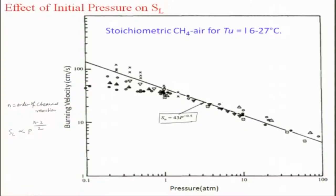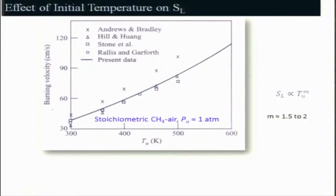People have also looked at various data and couched it in some other form which we will be discussing. Before that, we will look at the effect of initial temperature on the burning velocity. If you look at S_L, it is proportional to P to the power (n minus 2) divided by 2, and P is basically proportional to temperature.